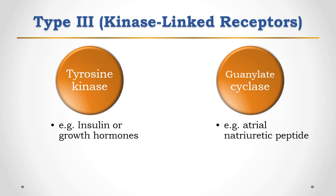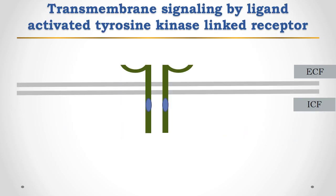Or they may be linked to guanylyl cyclase — for example, atrial natriuretic peptide receptors.